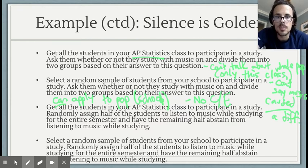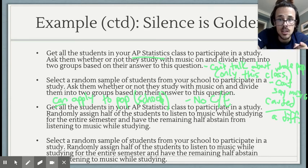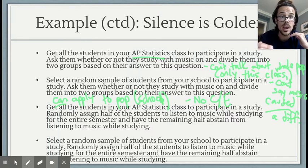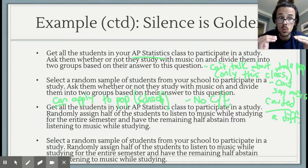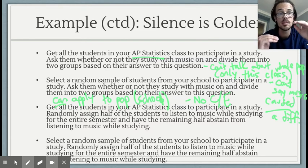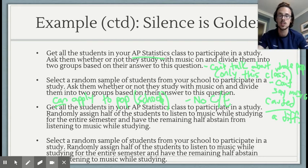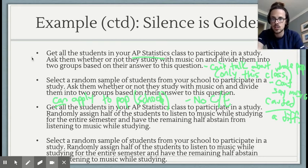Design 3: We take everybody in AP stats class — a captive audience — and now randomly assign half to each group. Random assignment should make the groups about equal in all different factors, so if there's a difference, I can say it's due to the music. This would be no for the population, but yes for cause and effect.